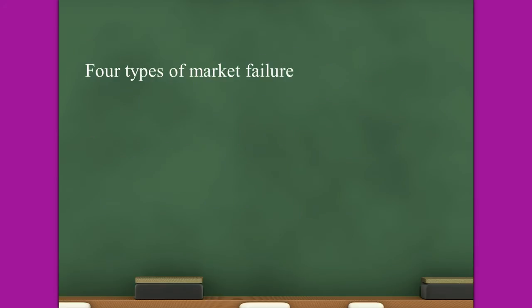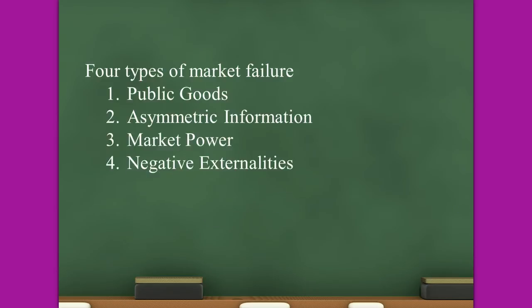There are four types of market failure, specifically mentioned in the study design — they're all part of the key knowledge of outcome one: public goods, asymmetric information, market power, and negative externalities. We're going to go through each one, one by one now.